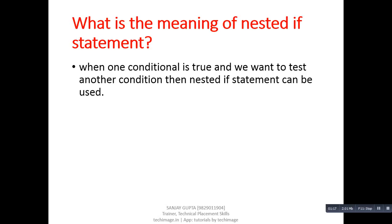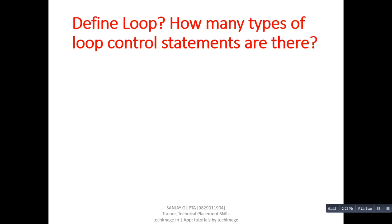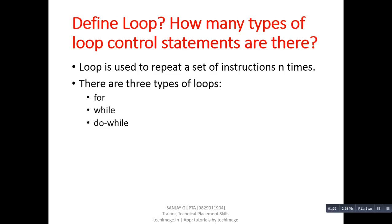Next question: Define loop. How many types of loop control statements are there? Answer: Loop is used to repeat a set of instructions N times. There are three types of loops: for loop, while loop, and do-while loop.